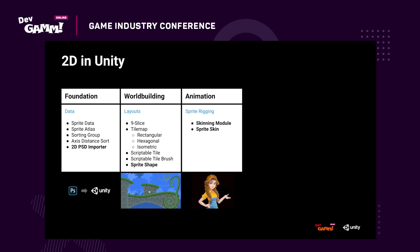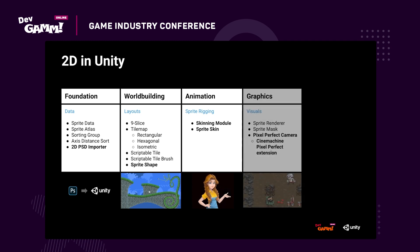In the area of animation we have our sprite rigging toolset. This includes a skinning module for adding and editing bones as well as generating and refining geometry and weights, and a sprite skin component that binds this all together in the scene. As for graphics, of course you can render sprites with sprite renderers. Sprite mask gives you control over which parts of your sprite to reveal or hide. And more recently pixel perfect camera ensures your pixel art projects render accurately.